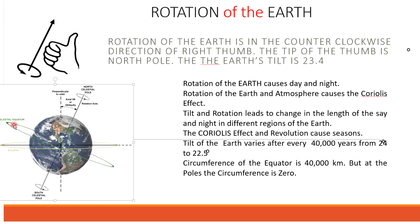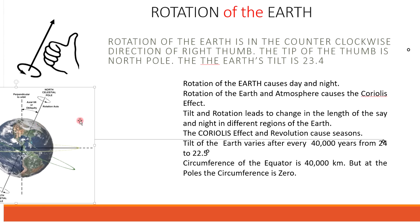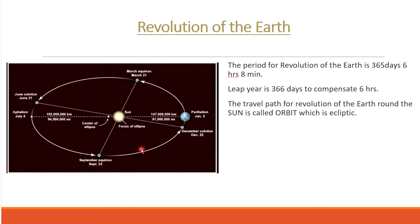Revolution of the Earth takes 365 days, 6 hours and 8 minutes. This is the time the Earth takes to go around the sun completely.